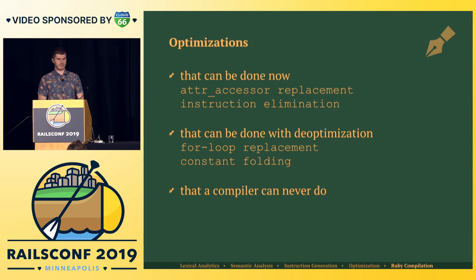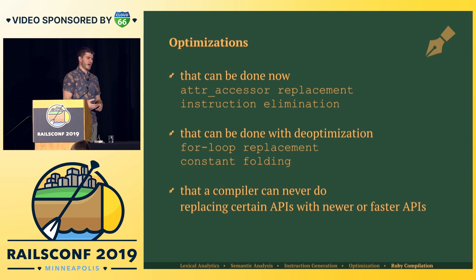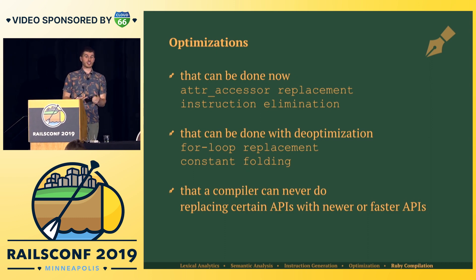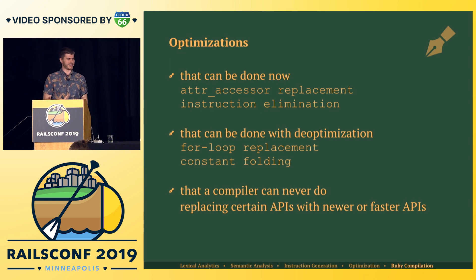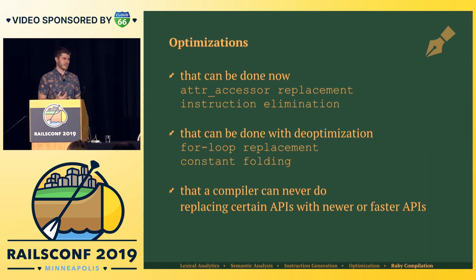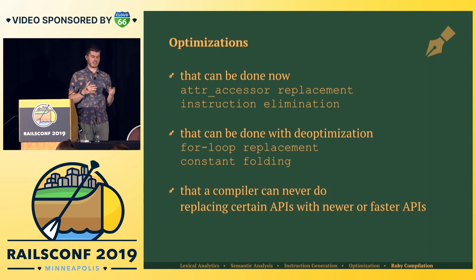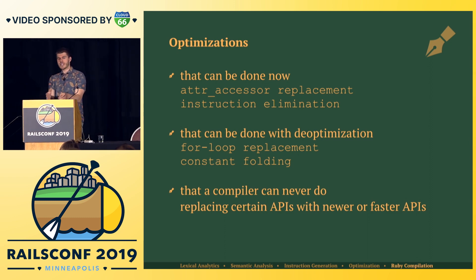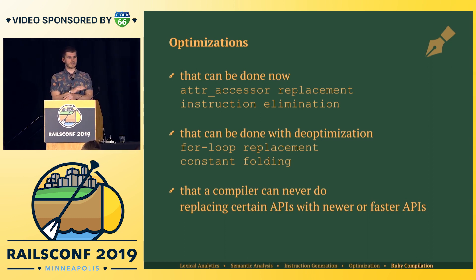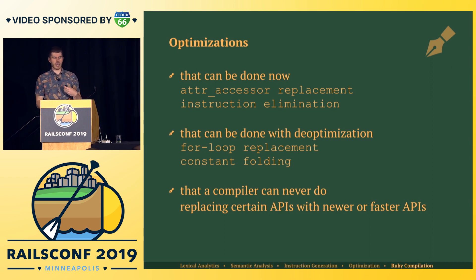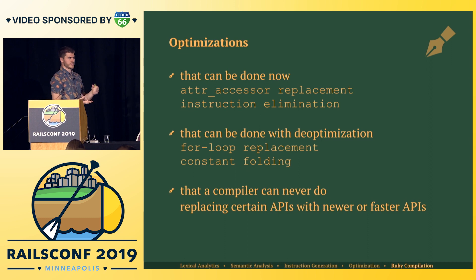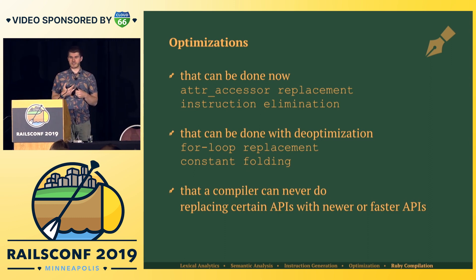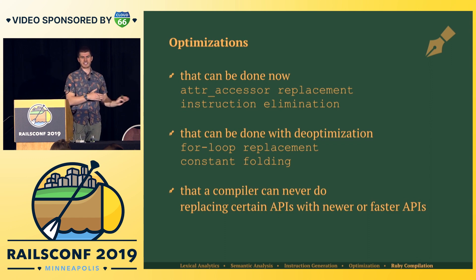A compiler shouldn't replace certain APIs with faster ones because that is inherently unsafe — the compiler can't possibly have enough context about your application to know whether that optimization is safe. But we as developers have the capacity to build optimizations like this for our own applications that speed up runtime, reduce memory, and are good for our applications. The compiler doesn't even have to see it, doesn't even have to worry about it.